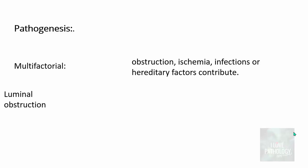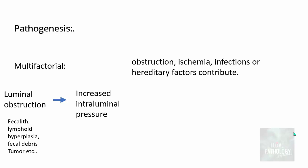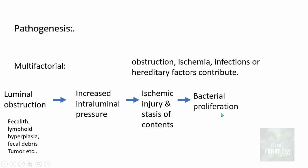Luminal obstruction results from various causes: hard compact fecal material, hyperplasia of lymphoid follicles in the submucosa particularly in children, fecal debris, or tumours involving the appendicular lumen. Once luminal obstruction occurs, there is a consequent increase in intraluminal pressure, leading to ischemic injury due to compression, stasis of luminal contents, and subsequent bacterial proliferation.